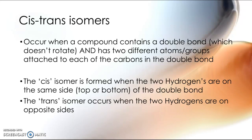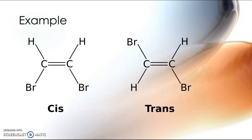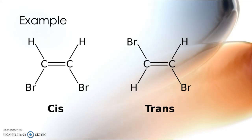Here is an example using geometric isomers. These are two examples of 1,2-dibromoethene, and in both cases we have a double bond where each carbon has a hydrogen atom and a bromine atom. This is a perfect example of molecules that can exist as cis-trans isomers because it fits the definition: there is a double bond which does not rotate, and each carbon has two different atoms or groups of atoms attached to it.